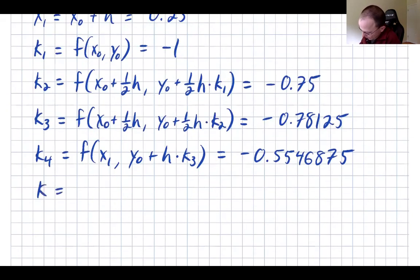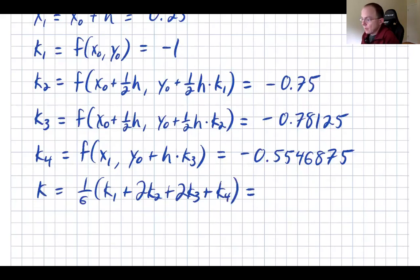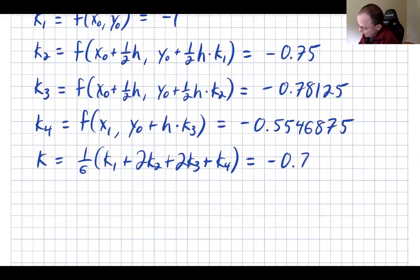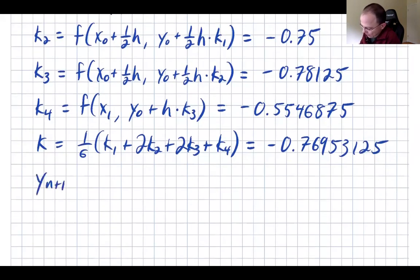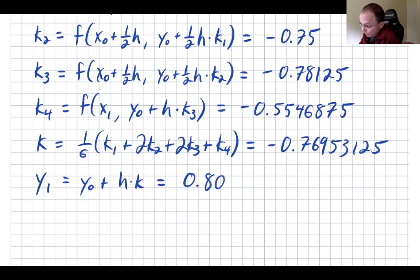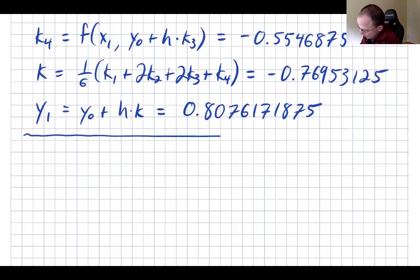Finally we do our weighted average: K = (1/6)(k₁ + 2k₂ + 2k₃ + k₄), giving K = −0.76953125. That's our final slope estimate. Now we update y: y₁ = y₀ + h·K = 0.8076171875. That is our first step.